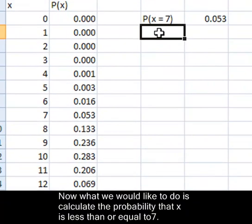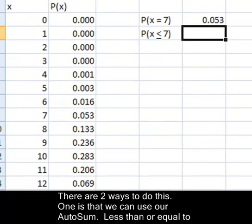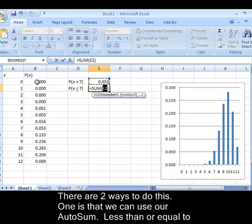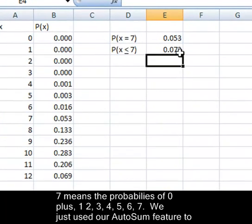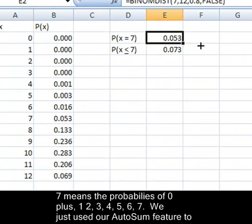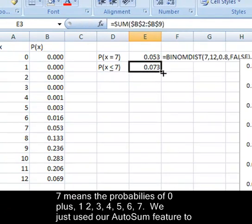Okay, now what we would like to do is calculate the probability that x is less than or equal to seven. There are two ways to do this. One is that we can use our auto sum. Less than or equal to seven means the probability of zero, one, two, three, four, five, six, seven. We just used our auto sum feature to find that.